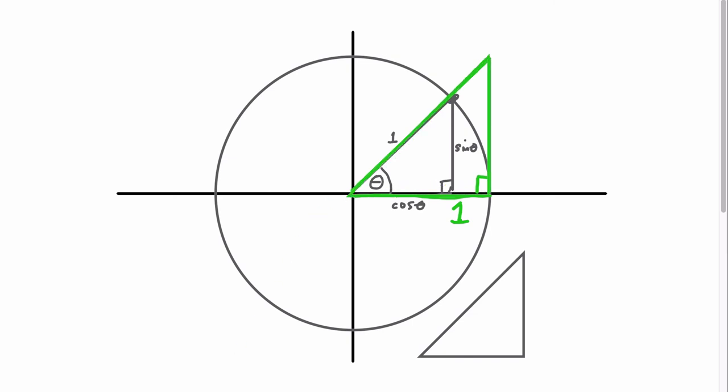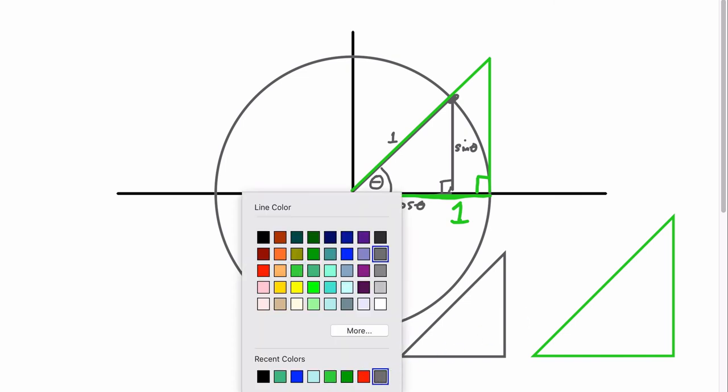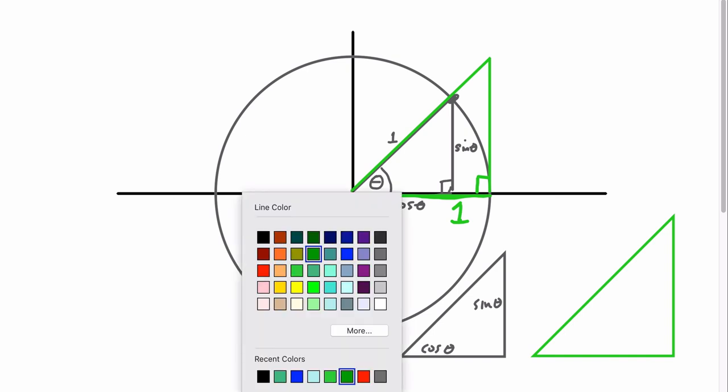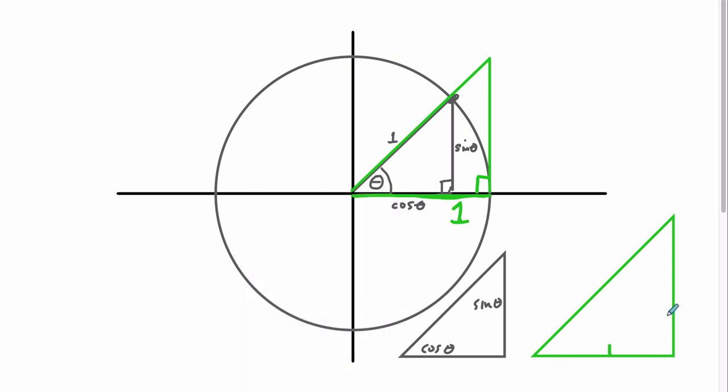And something amazing is about to happen. These are the two triangles. Instead of being on top of each other where it's hard to see, we'll draw them here. Now, look at this. This is beautiful. Beautiful, beautiful mathematics. All right. We have two right triangles, right? They're both right triangles. Here, in the smaller triangle, we said this is the sine of theta, and this is the cosine of theta. And over here, we've got, what do we have? We have one. This is one. So what is this?